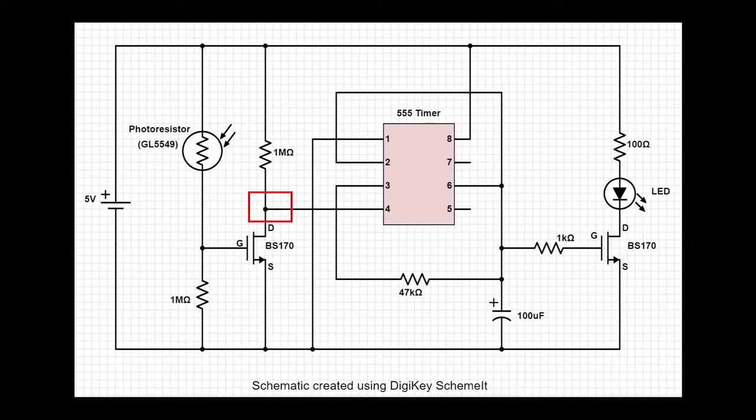As soon as the room gets dark, the resistance of the photoresistor goes high and the voltage at the gate drops below 0.8 volts, which is the minimum voltage needed to turn the transistor on. Once the transistor turns off, the drain will no longer be connected to ground but instead connected to 5 volts through the 1 megaohm resistor and activate the 555 timer.